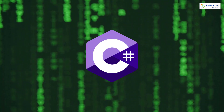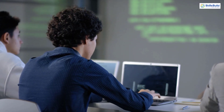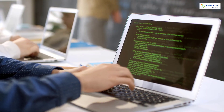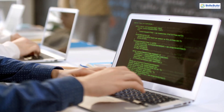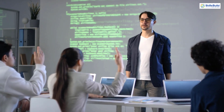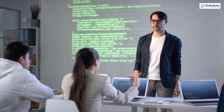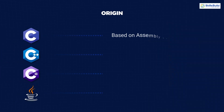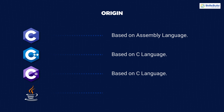C, C++, C#, and Java are some of those languages that beginners consider going with, but there are some major differences among all of them. I will talk about all these languages based on their common features and see which one is more powerful and which is better to start your programming journey. First, if we talk about origin: C is based on assembly language, C++ is based on C, and C# is also based on C.